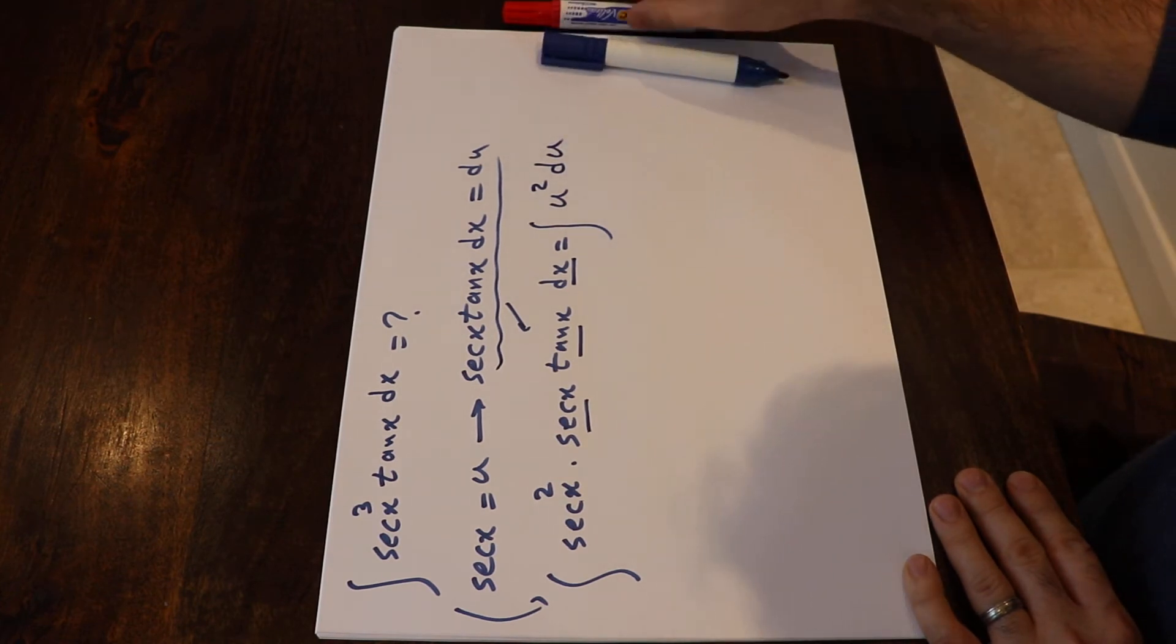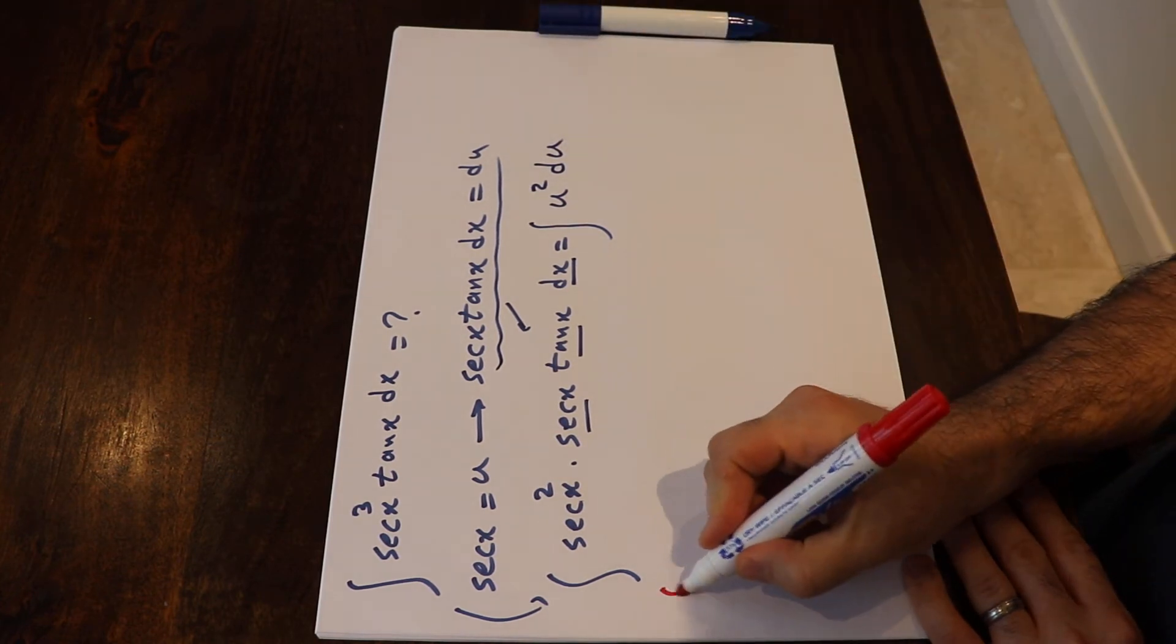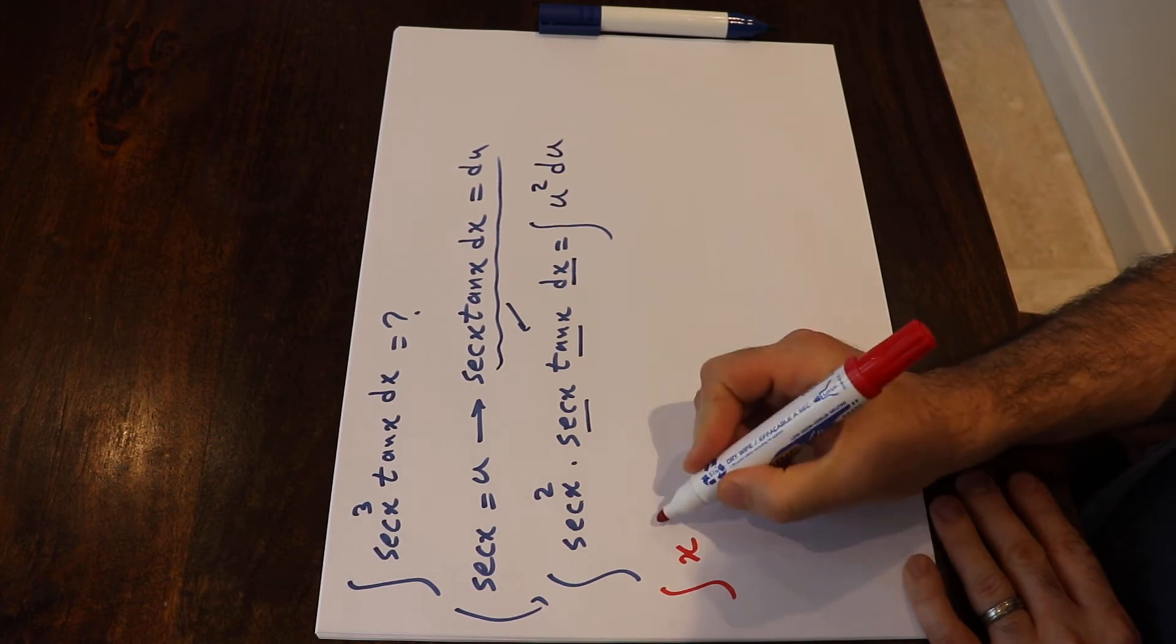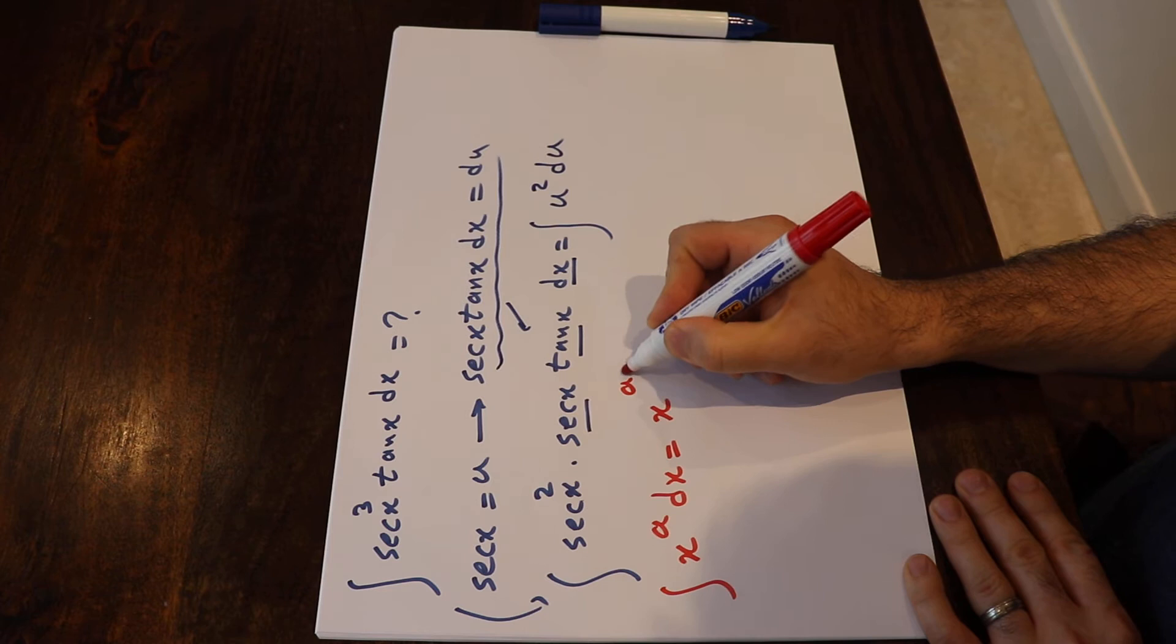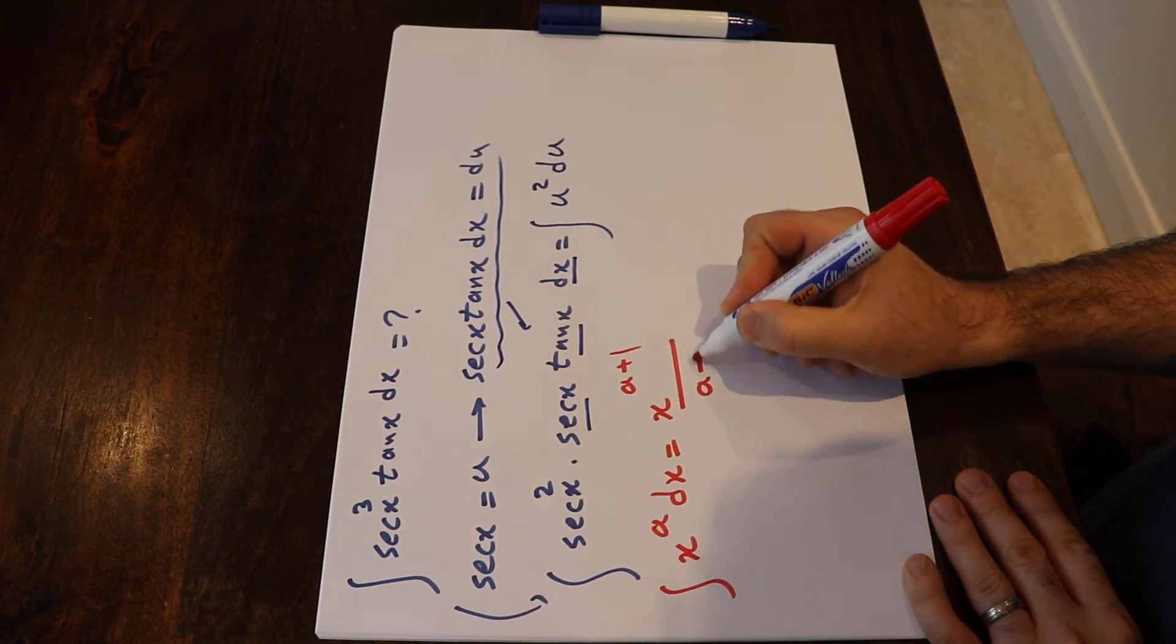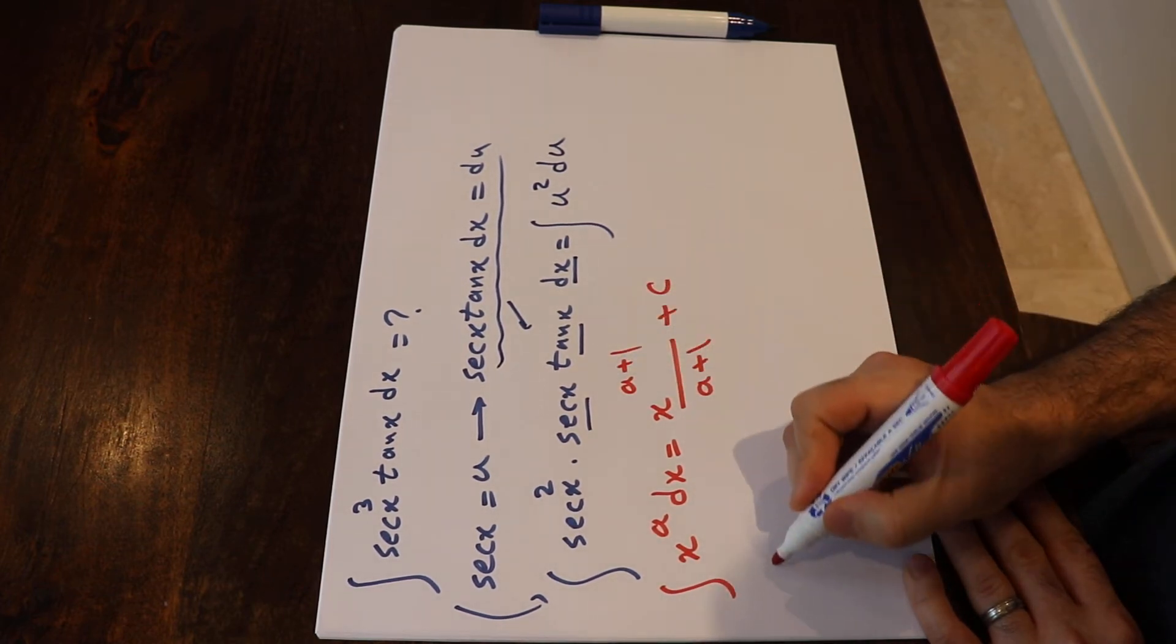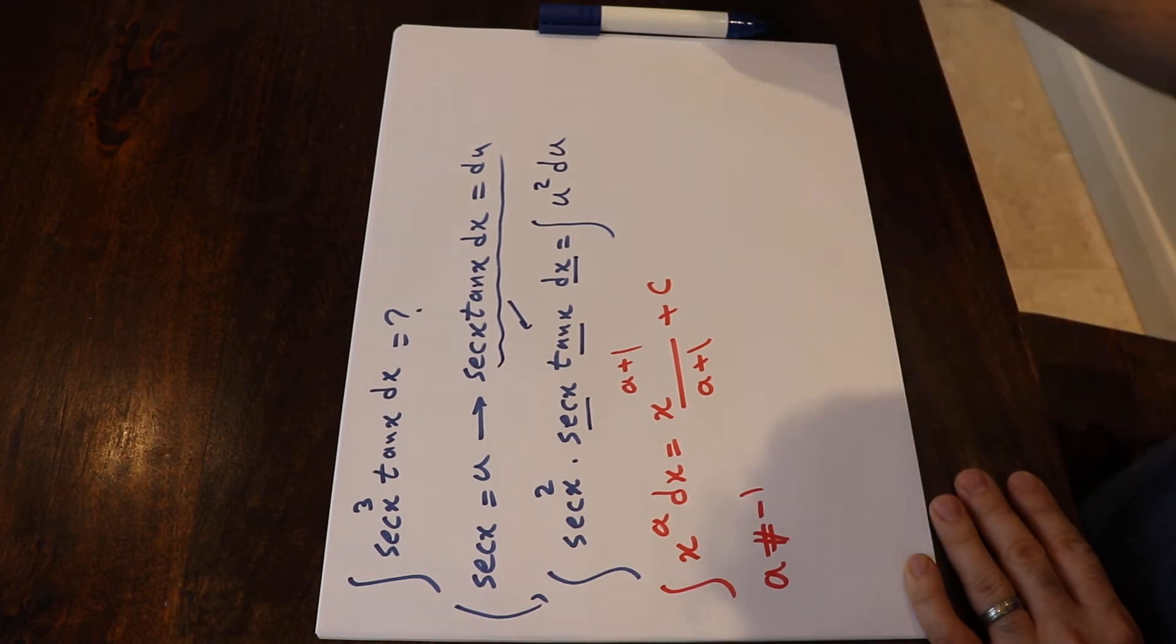Okay, and to solve this integral you need to know one formula: that is the integral of x^a dx is equal to x^(a+1) divided by a+1 plus c, assuming a is not equal to -1.